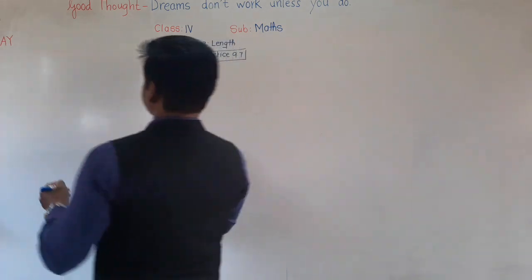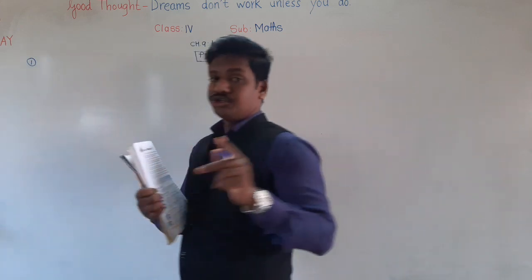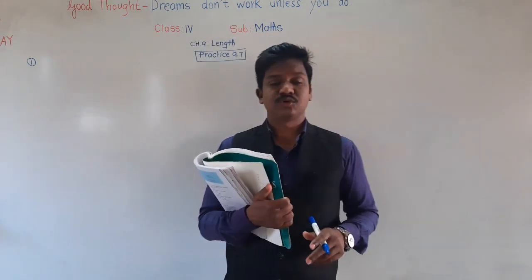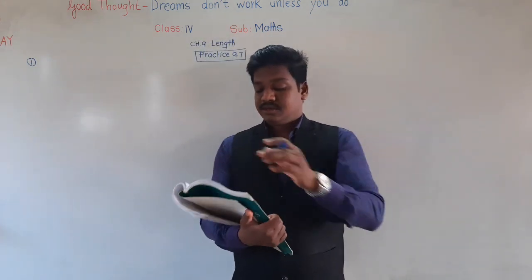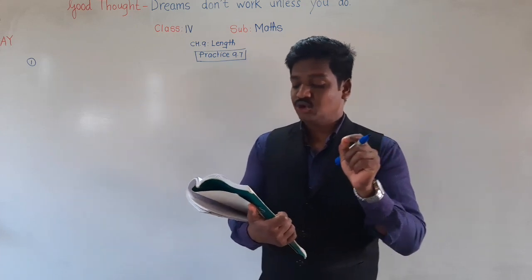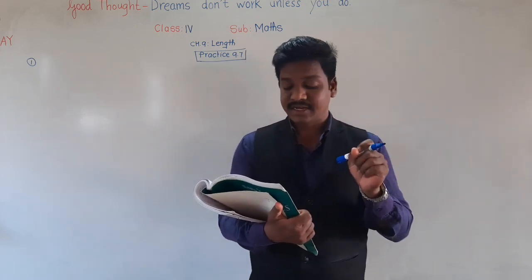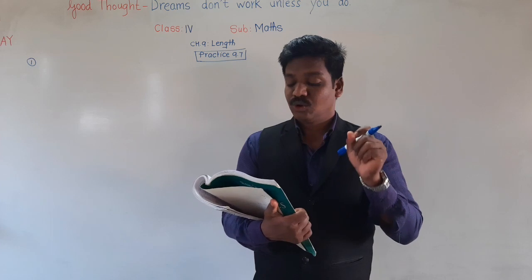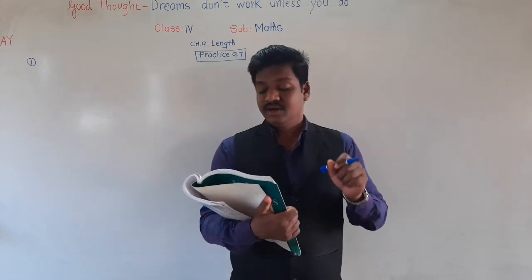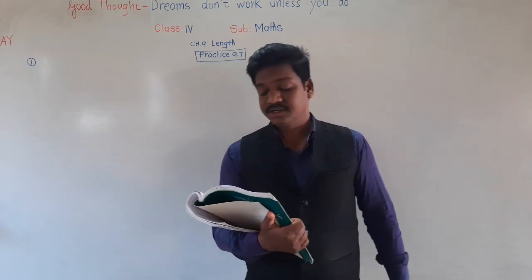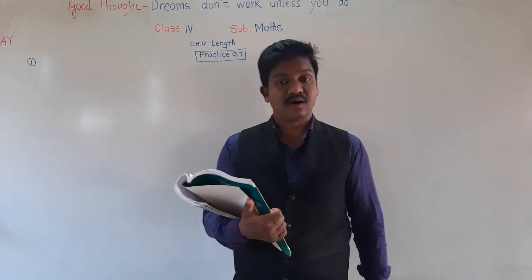See the first word problem. Put your finger on the first word problem. A 5 kilometer 822 meter long canal was extended at one end by 4 kilometer 132 meter. How long is it now?